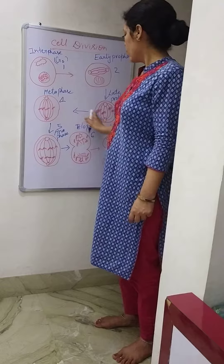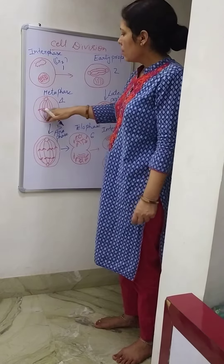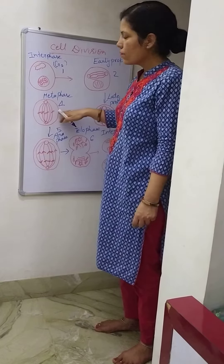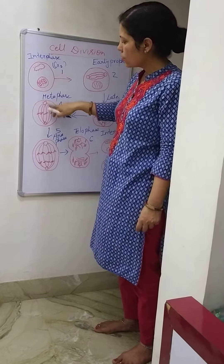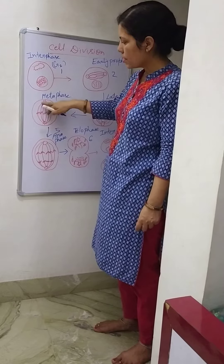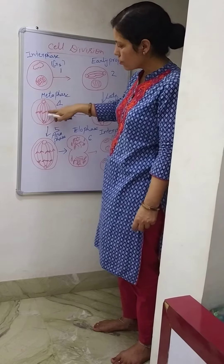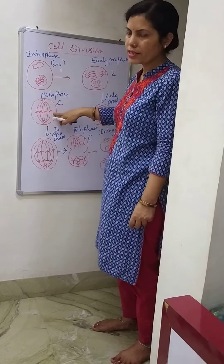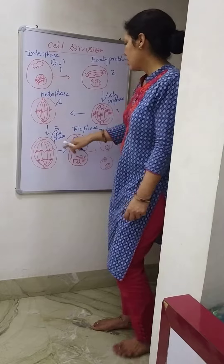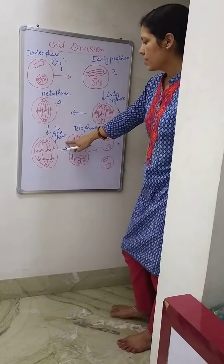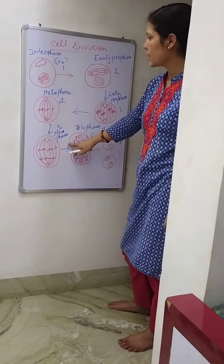Now metaphase. The chromosomes come in the center of the cell, and these two centrioles with spindles are visible. The chromosomes are set at the center. This is the fifth stage of cell division.